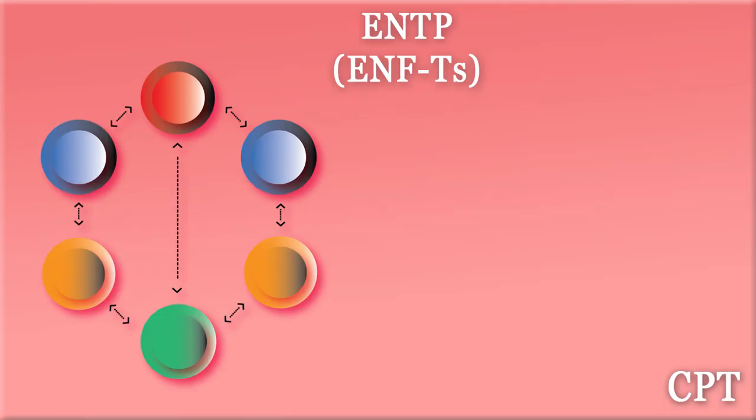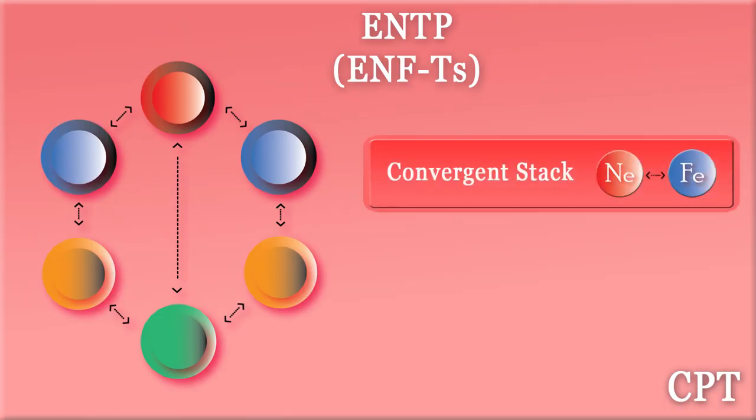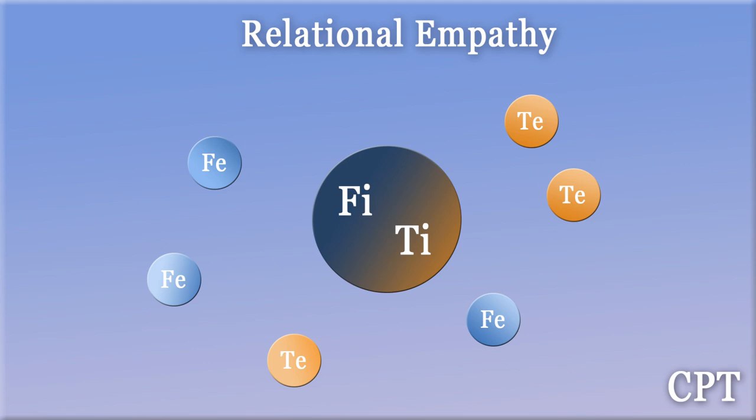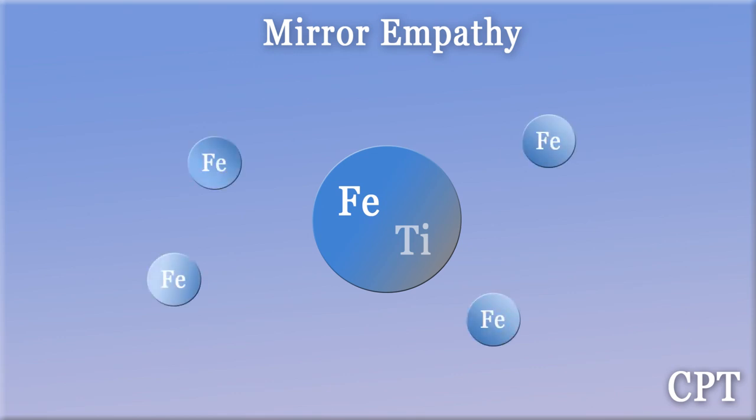The ENTP's dominant stack is instead extroverted intuition and extroverted feeling. As such, this is a type who gazes externally at a plethoric emotional landscape. Whereas the INTJ takes responsibility for their own emotions within their own plethoric landscape, the ENTP takes responsibility for the emotions of other people. Whereas the INTJ feels deeply any emotional dissonance within their own internal world, the ENTP feels strongly the emotional dissonance within the external world. The INTJ's empathy is more relational in nature, whereas the ENTP, being an extroverted feeler, has a high degree of mirror empathy — tending to feel the emotions around them within the moment.